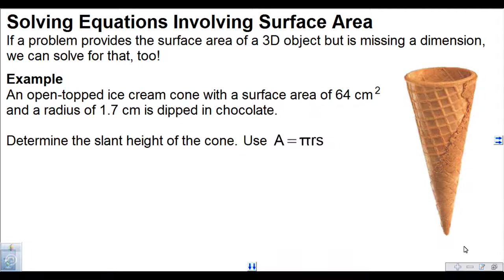Let's switch gears and do some surface area questions — it's pretty much the same thing, just different formulas, and sometimes a tiny bit more complicated. An open-topped ice cream cone with a surface area of 64 centimeters squared and a radius of 1.7 centimeters is dipped in chocolate. Determine the slant height of the cone. We're going to use the formula for just the lateral surface: pi r s.